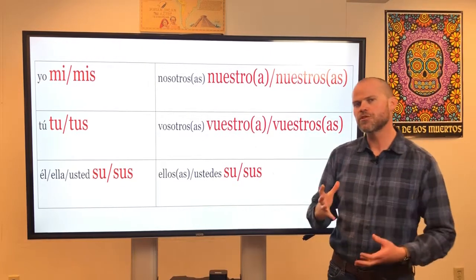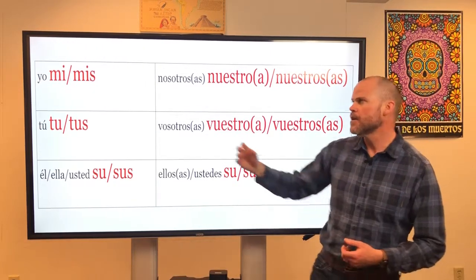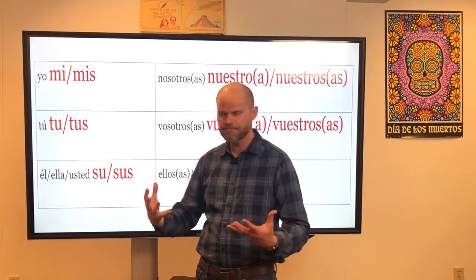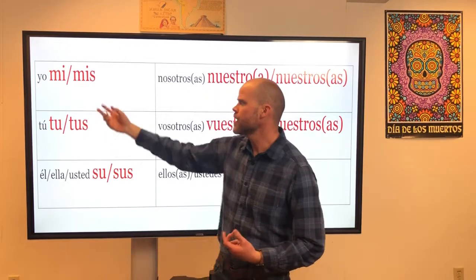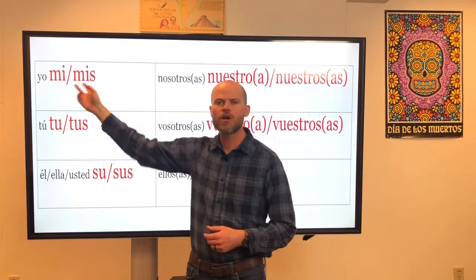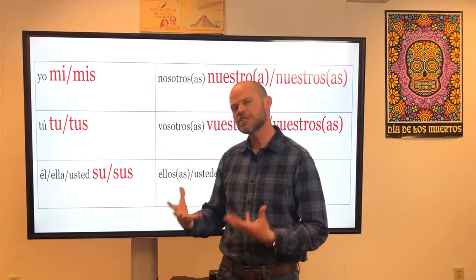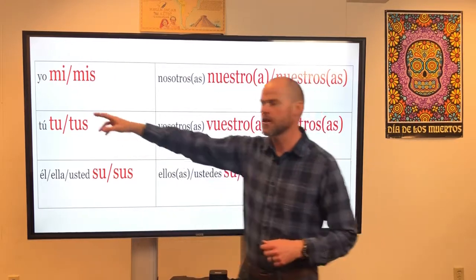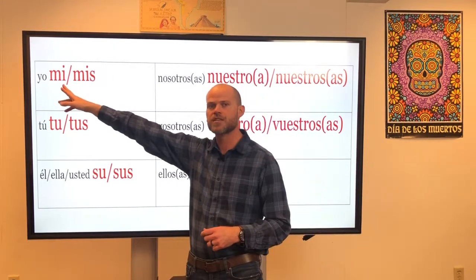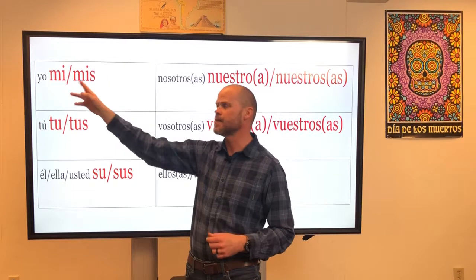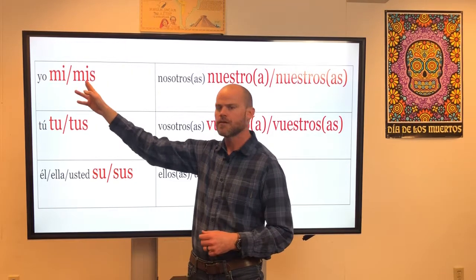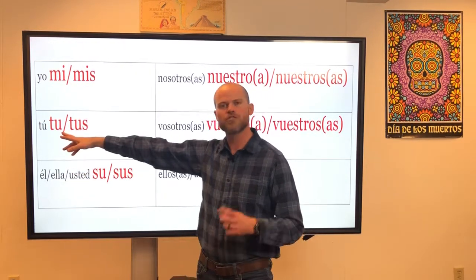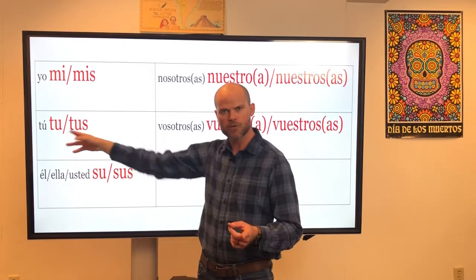Let me just quickly break this down. Mi or mis can mean "my." This is going to depend on the thing that's being possessed. If the thing that's being possessed is singular, you're going to say mi. If the thing that's being possessed is plural, you're going to say mis. And the same goes for tu and tus — tu is "your," or tus.